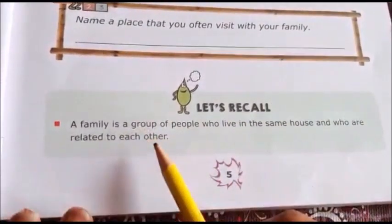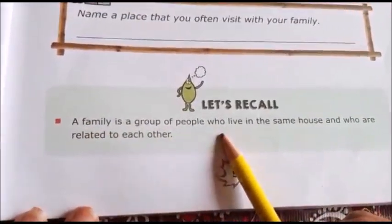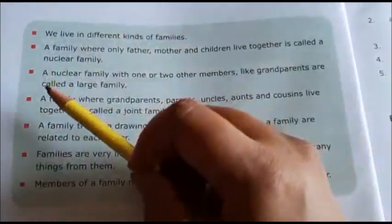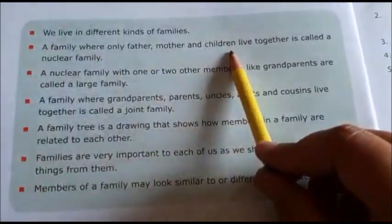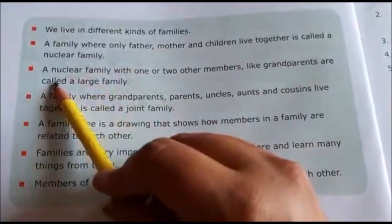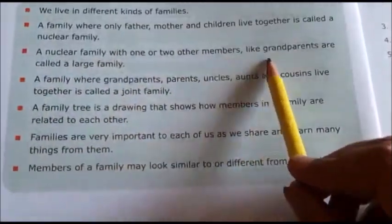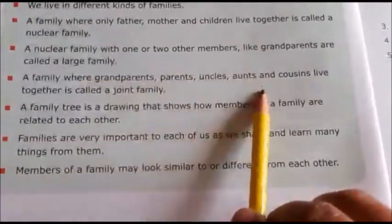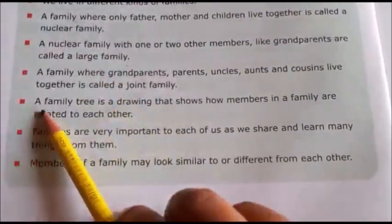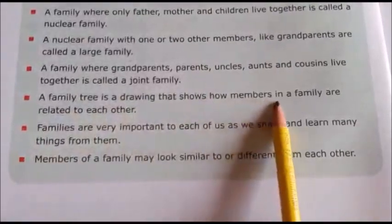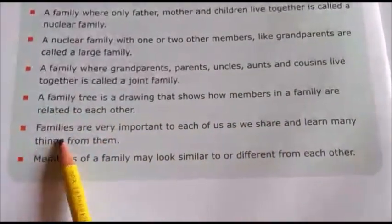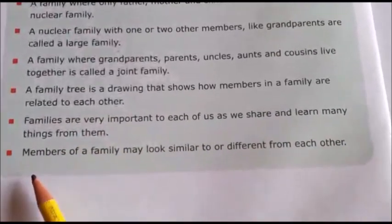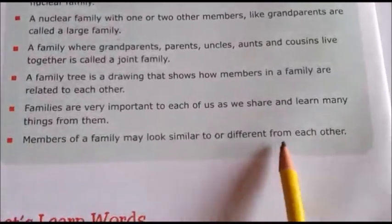Let's recall what we have learnt in this chapter. A family is a group of people who live in the same house and who are related to each other. We live in different kinds of families. A family where only father, mother and children live together is called a nuclear family. A nuclear family with one or two other members like grandparents is called a large family. A family where grandparents, parents, uncles, aunts and cousins live together is called a joint family. A family tree is a drawing that shows how members in a family are related to each other. Families are very important as we share and learn many things from them. Members of a family may look similar to or different from each other.